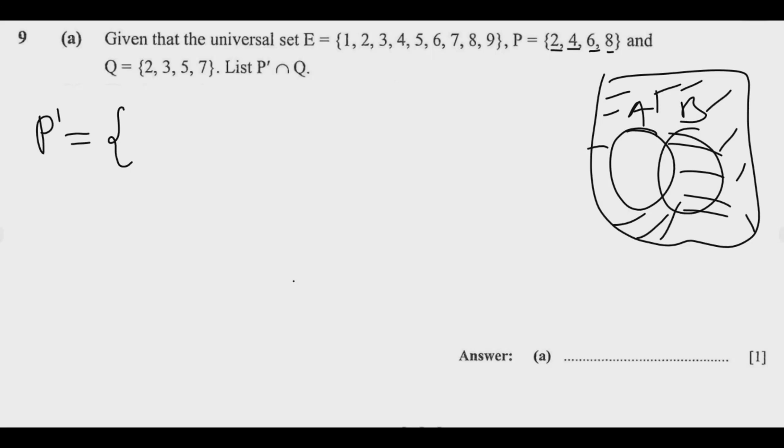In the universal set, we just take out those. So I'm going to have a 1, then 2 is in P so we skip 2. We go to 3, then 4 is in P we skip it, so we go to 5. Then 6 is in P so we skip 6, go to 7. Then 8 is in P we skip it, so we go to 9. So if we're looking for the elements that are not found in P but are found in the universal set, we're deleting this from the universal set. What remains gives us P complement.